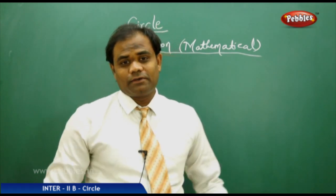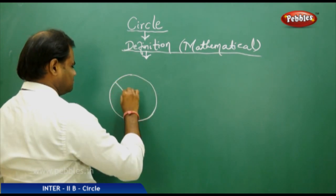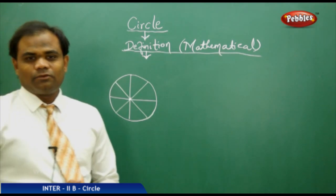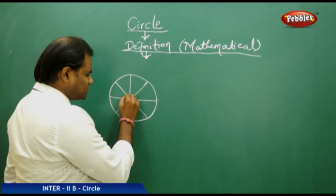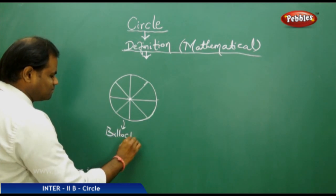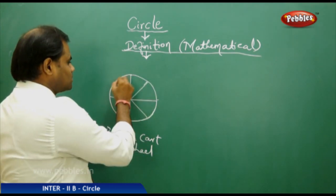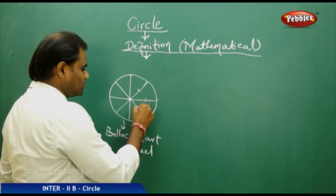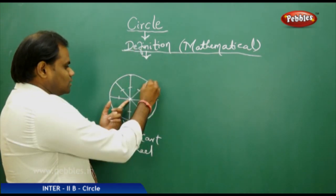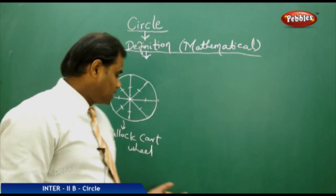Let's look at the mathematical definition using a real-life example — a circular wheel. Now imagine I have a circular wheel. We know that this wheel has all its spokes equal in length. If I take a bullock cart wheel, I can clearly see that each of the sticks attached to the endpoints of the rim of the wheel are equal — that is, they are equidistant. This makes me understand that for a perfect circle to be formed, the distance from the center to each of the edges must be the same.